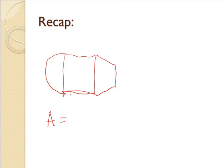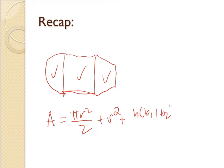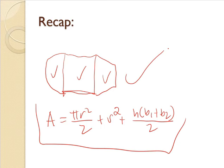Area is equals to the area of the semicircle, which is pi R squared over 2. So for the square, plus S squared. And then for the trapezoid is H times B sub 1 plus B sub 2 over 2. So that's how we get its area.